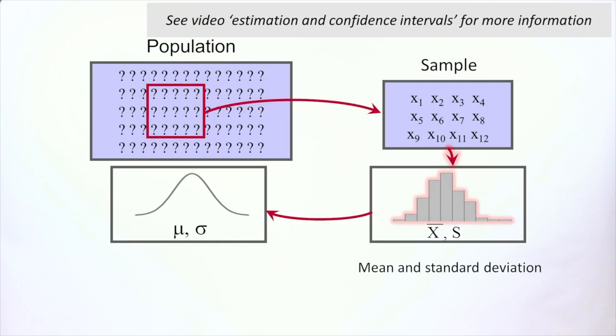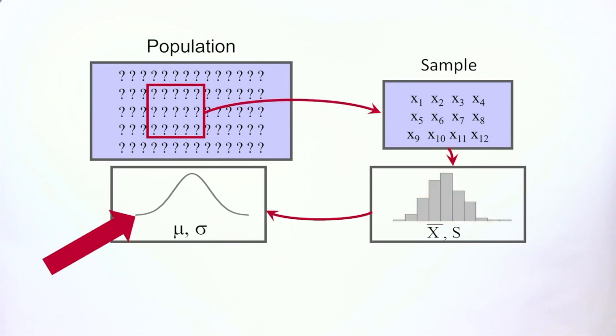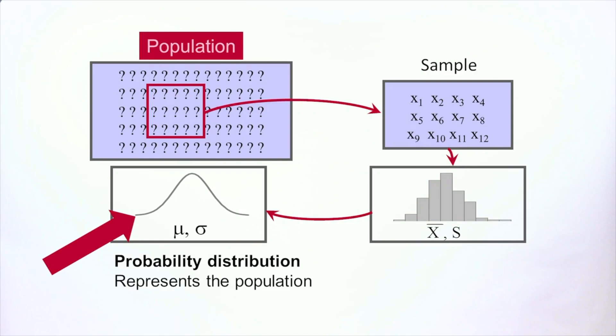In this video, we are going to talk about this curve, the probability distribution. In statistics, a histogram represents a sample, and the curve represents an entire population.